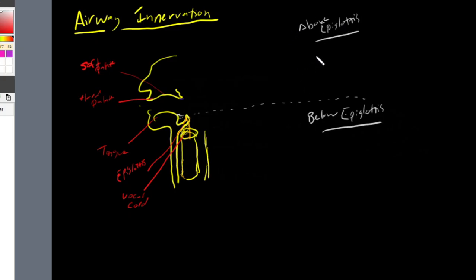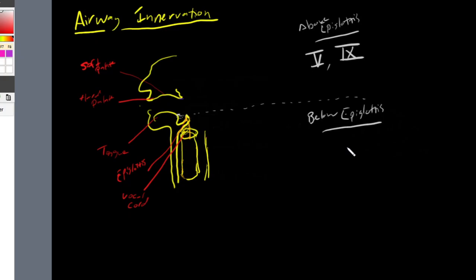Above the epiglottis, the cranial nerves at play are cranial nerve 5, or the trigeminal nerve, and cranial nerve 9, or the glossopharyngeal nerve. Below the epiglottis, sensation and motor function is carried out solely by cranial nerve 10, which is our vagus nerve.